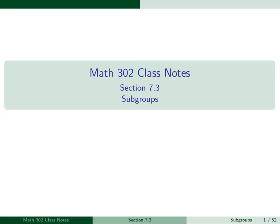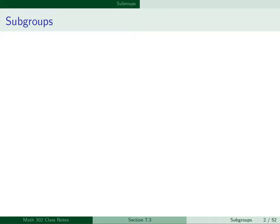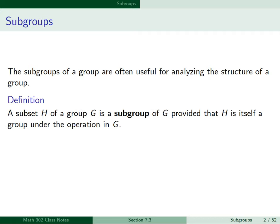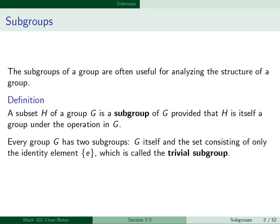This is the video for Section 7.3 Subgroups. The subgroups of a group are often useful for analyzing the structure of a group. Our definition says that a subset H of a group G is a subgroup of G provided that H is itself a group under the operation in G. Every group G has two subgroups: G itself, and the set consisting of only the identity element E, which is called the trivial subgroup. All other subgroups are called proper subgroups.